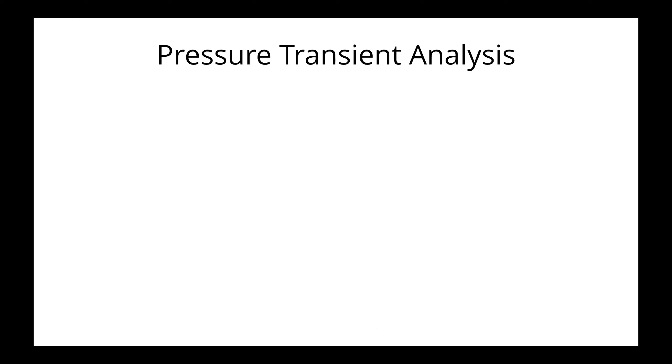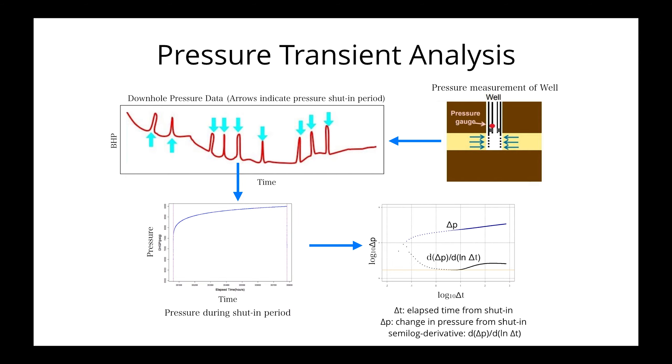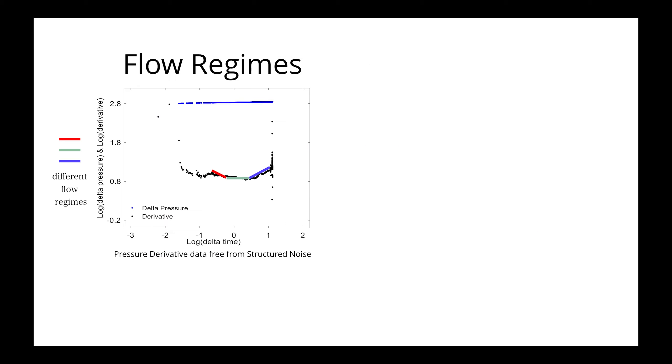In oil and gas industry, permanent downhole pressure gauges are installed in wells drilled in oil and gas fields that continuously record pressure data. The recorded pressure data during shut-in period is converted into pressure derivative data to identify different flow regimes. The flow regimes reveal information about reservoir condition and future production capabilities.